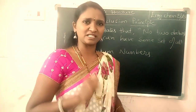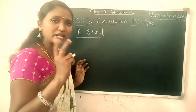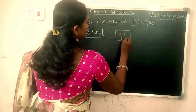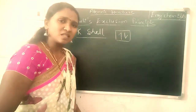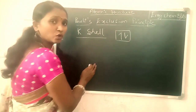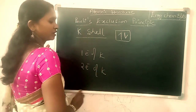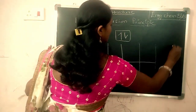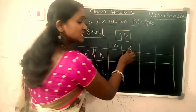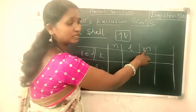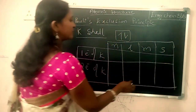Let us take an example. Consider the K shell, which has only two electrons in the 1s orbital. Consider the 1s orbital - it has two electrons. Now let us see the four quantum number values for these two electrons: the first electron and the second electron of the K shell. The four quantum numbers are n (principal), l (azimuthal), m (magnetic), and s (spin).